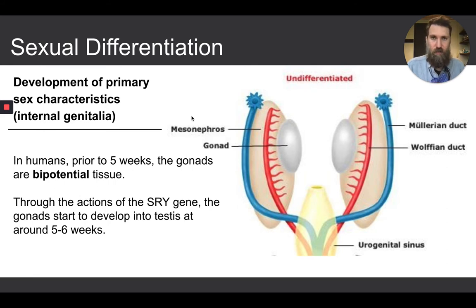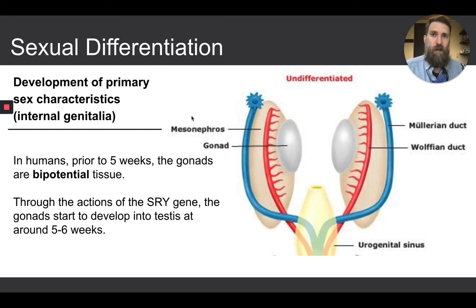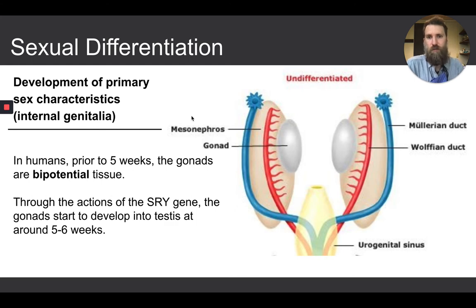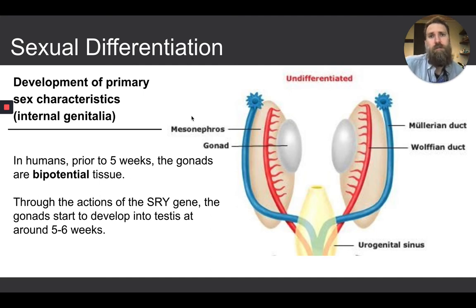In the absence of the SRY gene — which is usually the case when you're an XX individual — you don't have that transcription factor, you don't have testes-promoting genes being turned on, and you don't have repression of ovarian genes. So by default, the gonads naturally develop into ovaries. The default, in the absence of SRY, is ovaries.